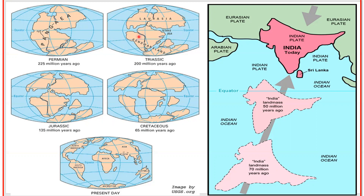Slowly these land masses kept drifting away from each other and finally reached their present positions. When the Indian landmass drifted away from Gondwana land and collided with the Eurasian plate, the great northern mountains were formed.